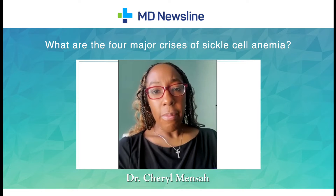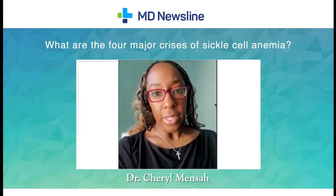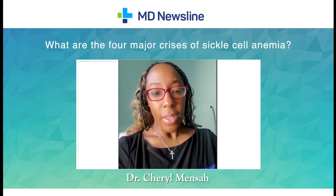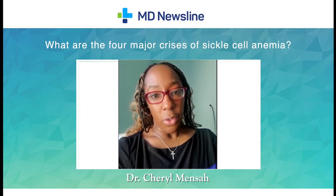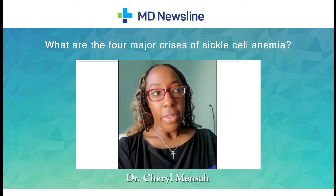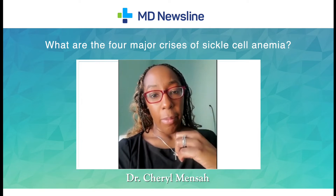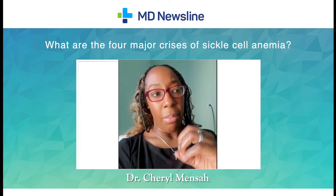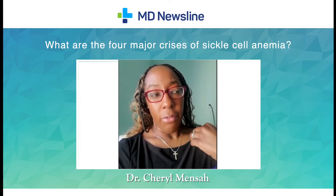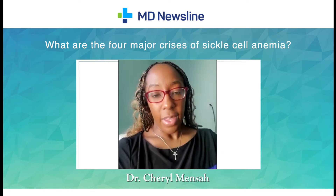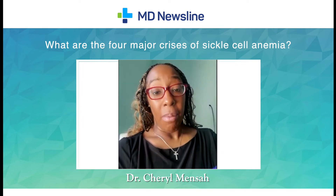The four major types of crises are vasocclusive, aplastic, splenic sequestration, and hyperhemolytic. The most common is vasocclusive crisis. This is characterized by having red blood cells that block up the blood vessels, and by blocking up the blood vessels, it reduces oxygen supply to the organs and causes pain, and it's the most common one that we see.